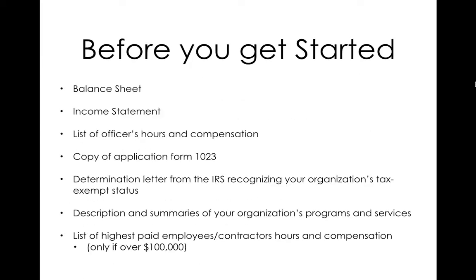So before you get started with the 990EZ in general and with Aplos, here are some things you're going to want to collect. One is a balance sheet — this shows your assets equaling your liabilities plus your equity for the organization. Chances are if you use any accounting software, whether it's Aplos or QuickBooks or anything, there should be a balance sheet report, as well as an income statement. The income statement shows how much money you've received, less how much you've spent, and that equals your net income for the period, which is the 2013 year. You'll also need a list of your officers' hours and compensation.